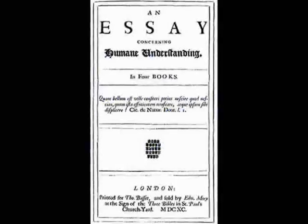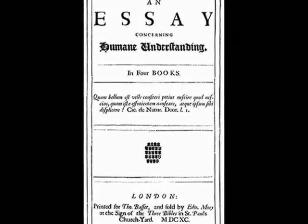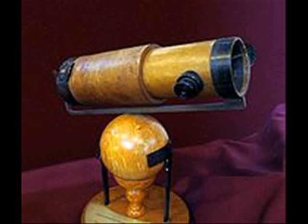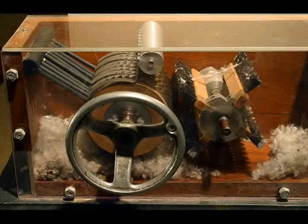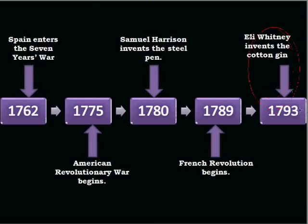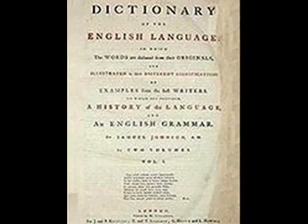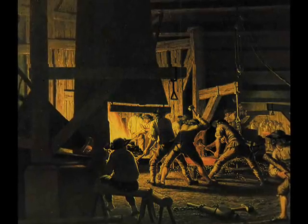The period of the 18th century is commonly known as the Age of Enlightenment, or the Age of Reason. Major emphasis was put on reason, logic, harmony, and stability. The period saw much growth in technology, from the invention of the telescope by Isaac Newton in 1668 to the invention of the cotton gin by Eli Whitney in 1793. In literature, Dr. Samuel Johnson published the first dictionary of the English language in 1755.